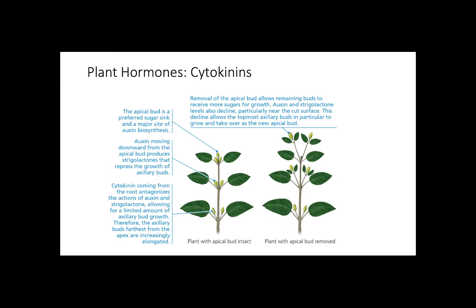The next group of hormones is cytokinins. Cytokinins are known as growth regulators and, as the name implies, they work by stimulating cytokinesis during cell division. Cytokinins are mainly produced in roots and transported to other organs. They regulate cell division in shoots and roots as well as promote movement of nutrients. Cytokinins are especially important for apical dominance, antagonizing or inhibiting the action of auxins, reducing apical dominance and allowing axillary buds to grow and elongate.